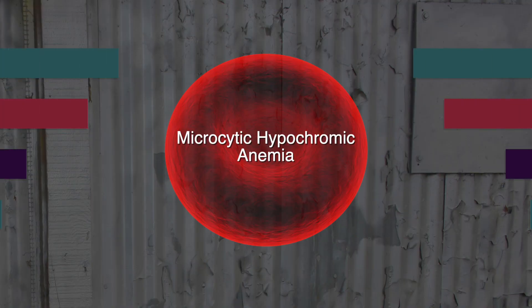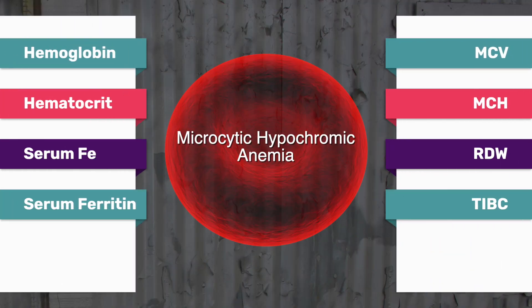Let's look at some labs for a patient that is iron deficient. This would be a typical lab value report for someone with iron deficiency. The hemoglobin will be low, expressed in grams. The hematocrit will be low, expressed as a percentage. The serum iron will also be low, and the serum ferritin will be low — this measures iron storage.